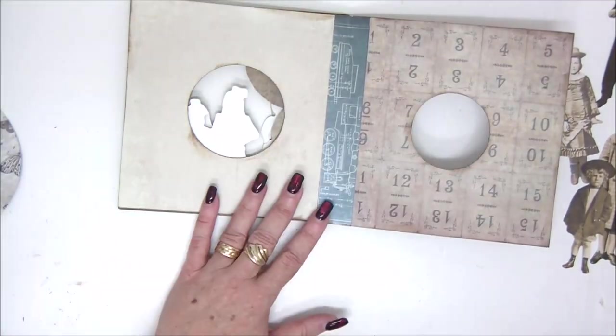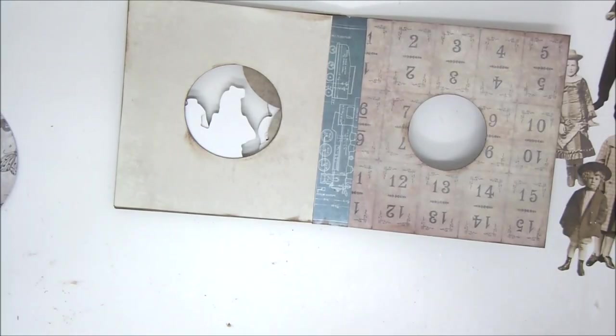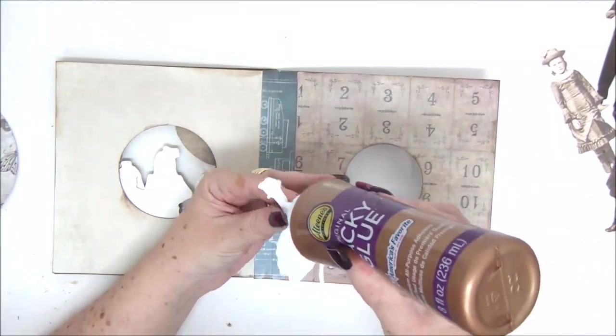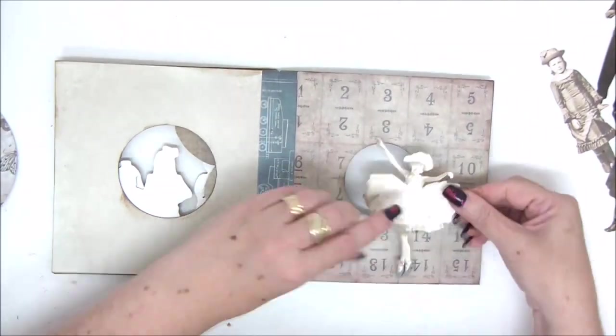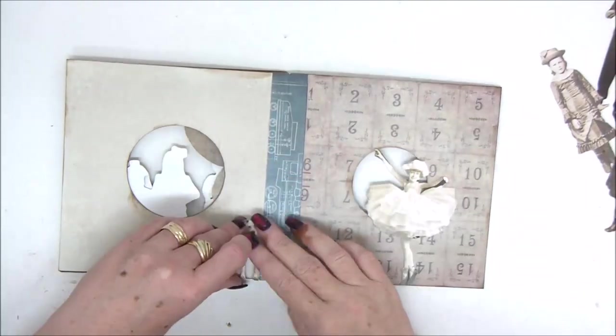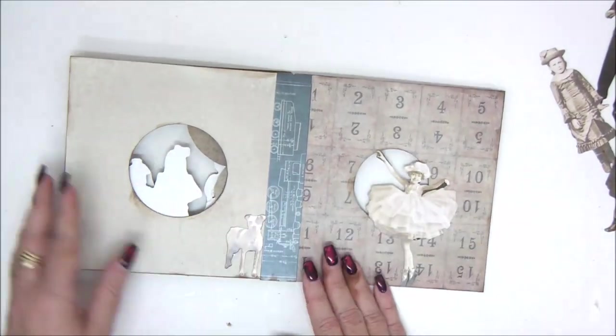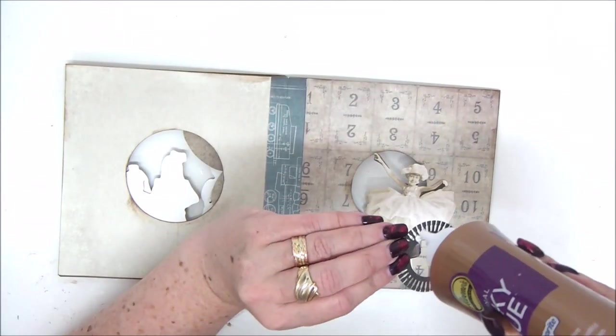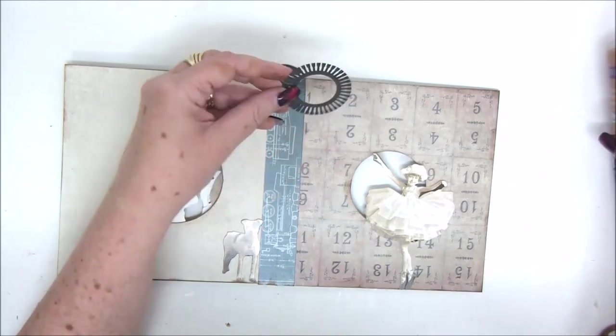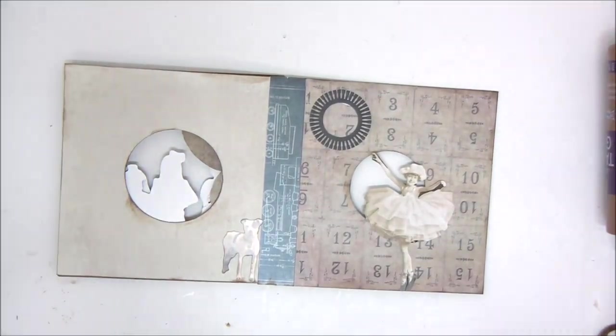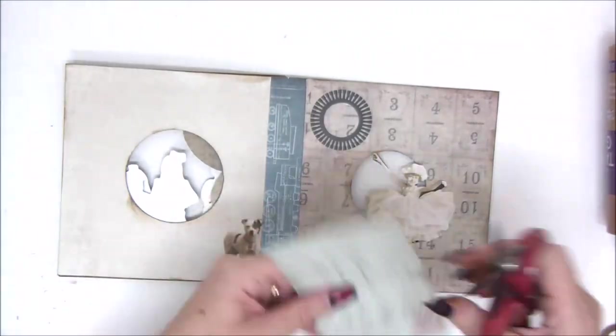I'm also going to add some metal embellishments later, but I first wanted to embellish the entire book with the paper embellishments that I wanted to add. Then I'll go back and add little metal embellishments wherever I can, as long as they are thin enough. This looks like the sun.